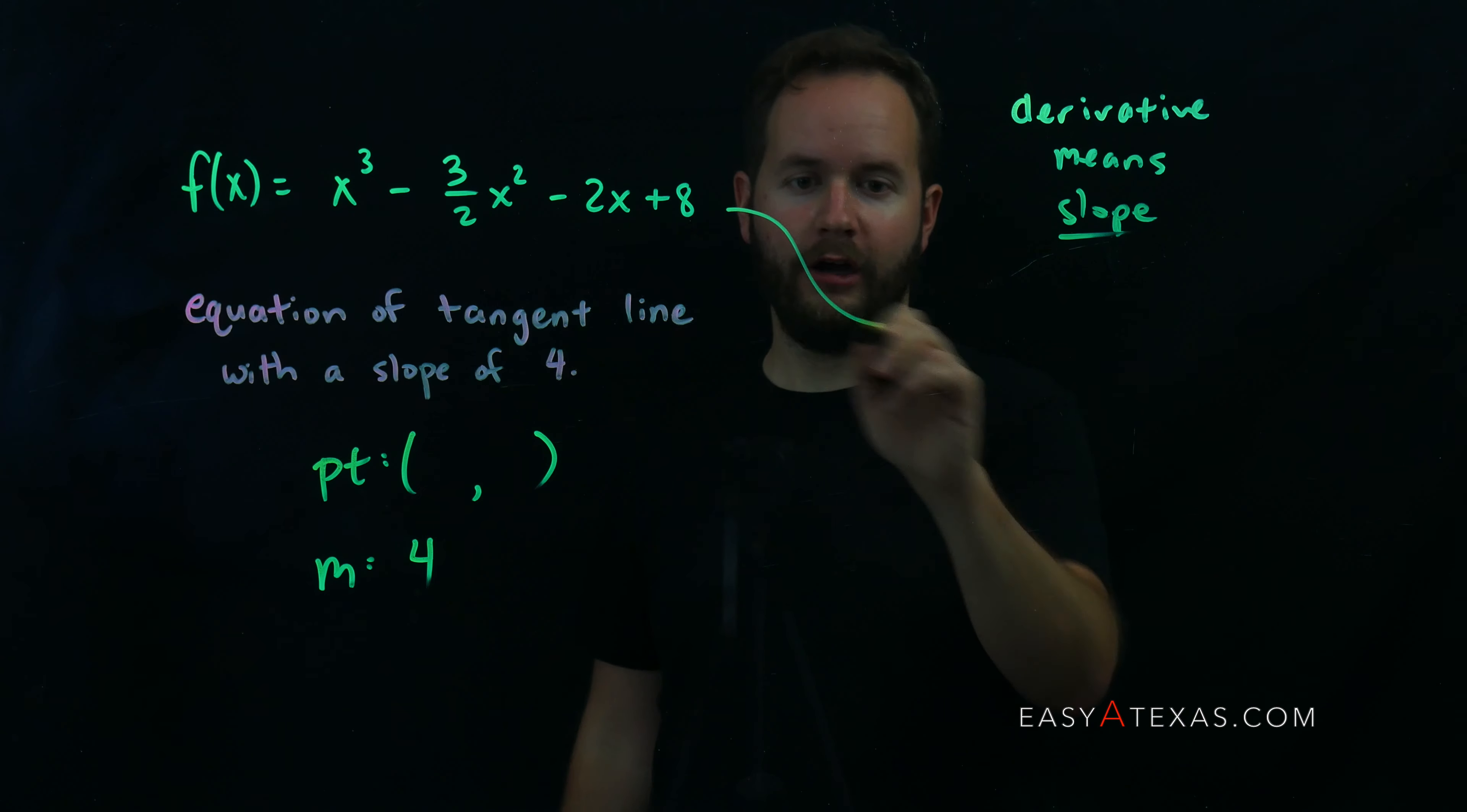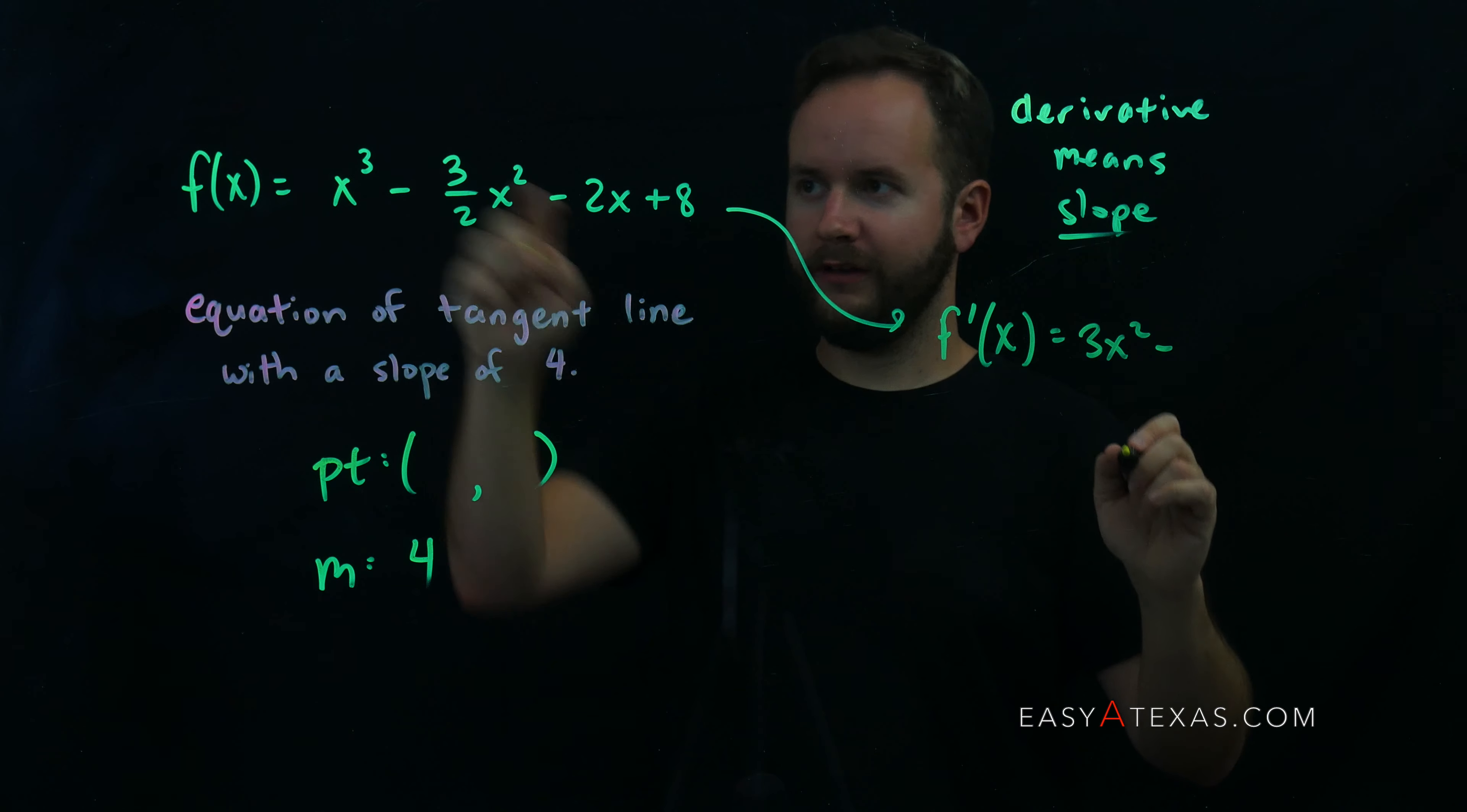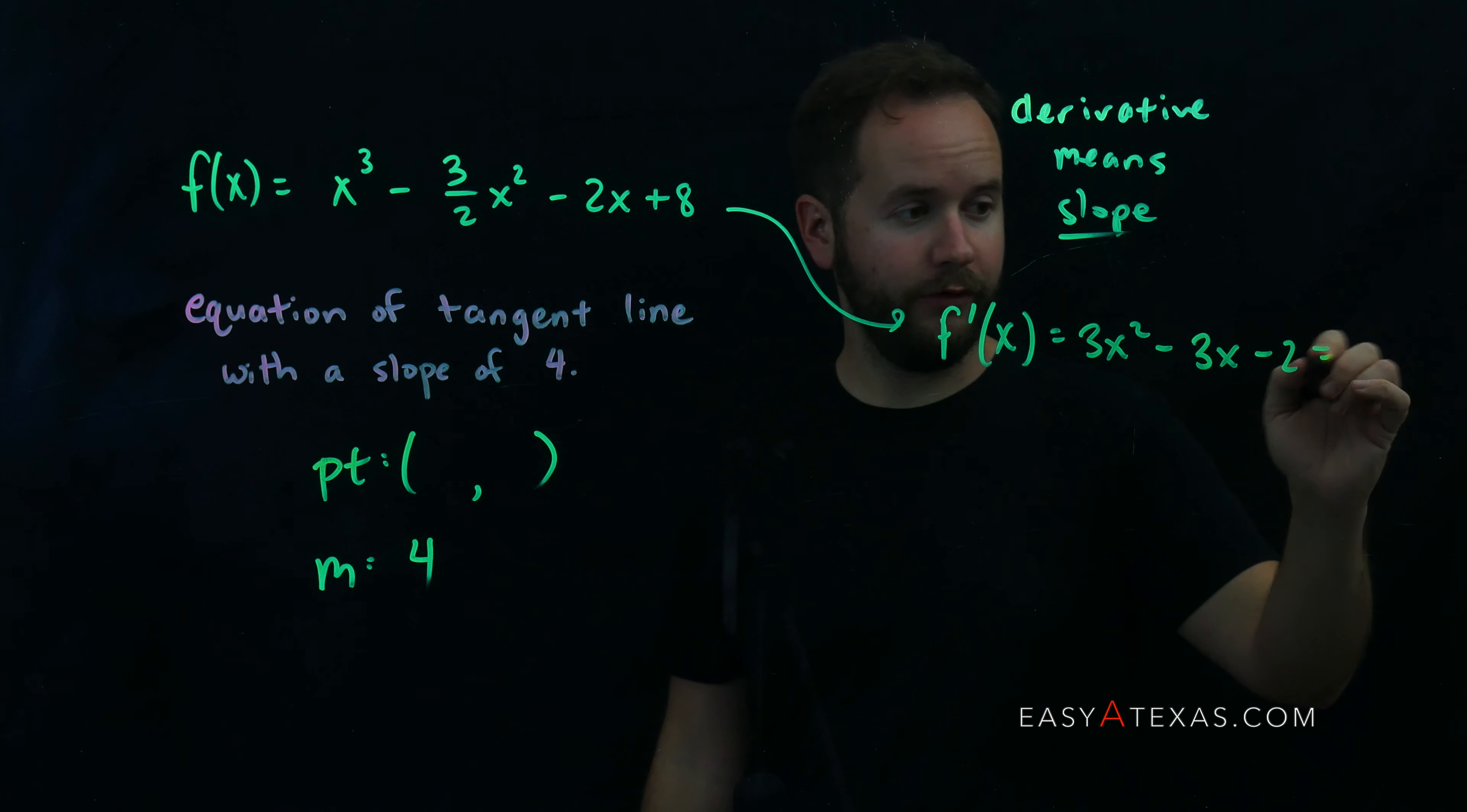Let's go ahead and get our hands on the derivative. The derivative of this expression is f prime of x equals 3x squared minus, the 2 will come down in front, times 3 halves is minus 3x, and the derivative of negative 2x is just negative 2, and we're told that this is equal to 4.